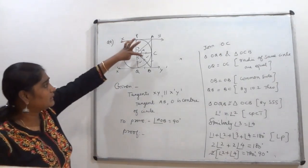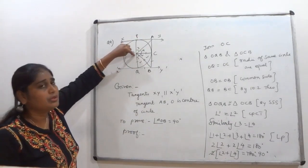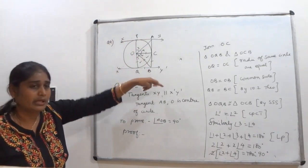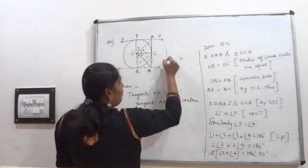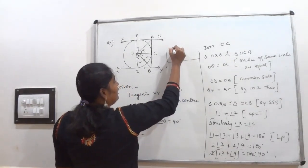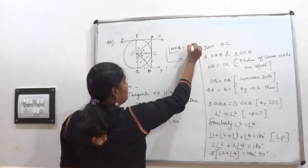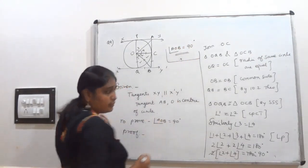What is angle 2 plus angle 4? That will give you this angle AOB. So at last write it here: angle AOB equal to 90 degrees. Hence proved.